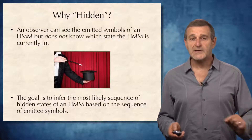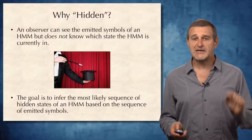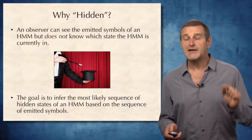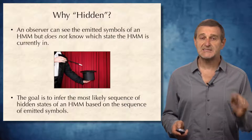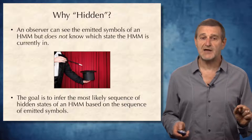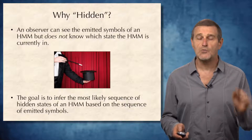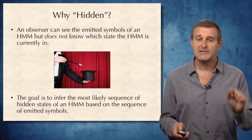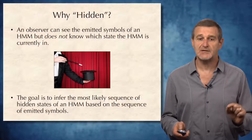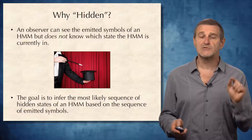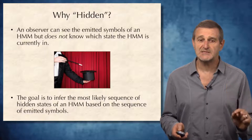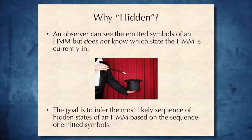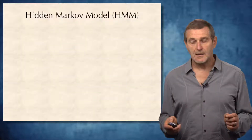Why the word 'hidden' in the hidden Markov model? An observer can see the emitted symbol of an HMM, but doesn't know which state the machine was in when it was emitted — this is the hidden part. The goal is to infer the most likely sequence of hidden states of an HMM based on the sequence of emitted symbols.